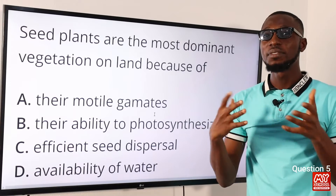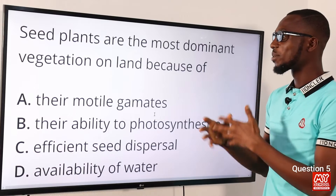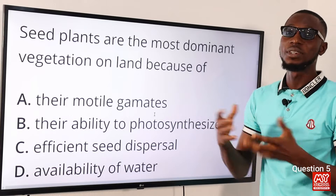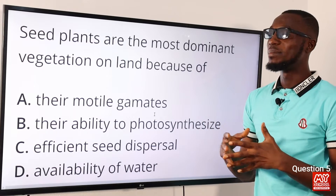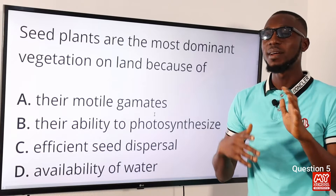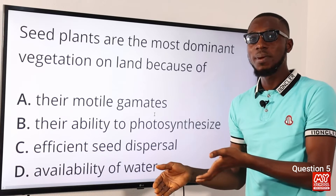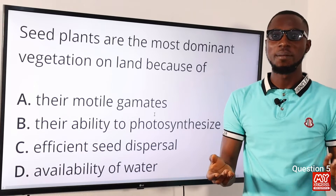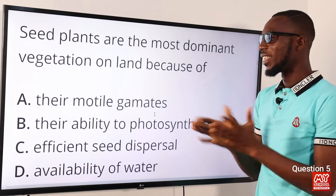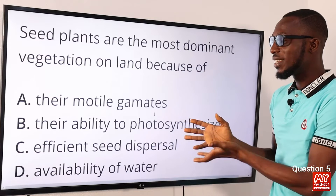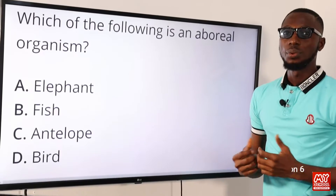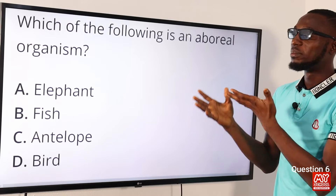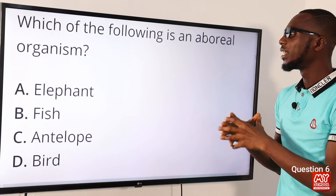Question five: seed plants are the most dominant vegetation on land because of efficient seed dispersal, which accounts for their widespread distribution. When you talk about seed plants, you're talking about the spermatophytes — the gymnosperms and the angiosperms. So the correct option is option C for efficient seed dispersal.